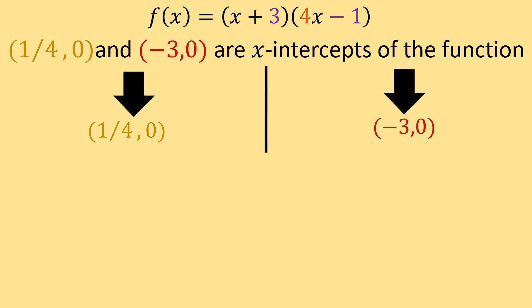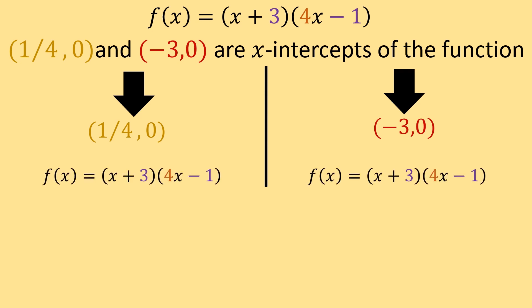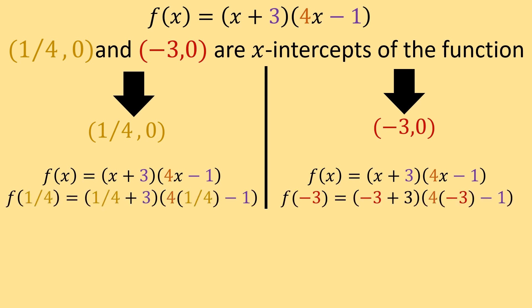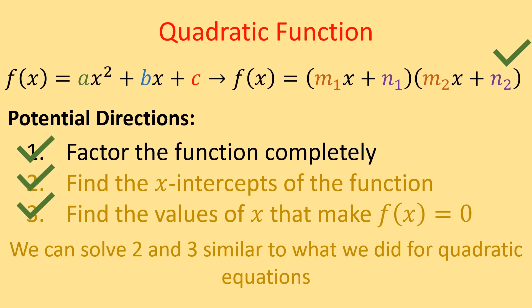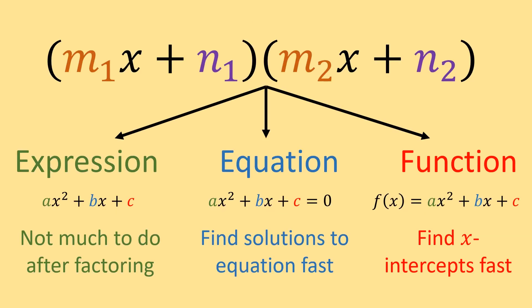To check, we plug 1 fourth and negative 3 into our function. Continuing to simplify, we get f of 1 fourth equals 0 and f of negative 3 equals 0, confirming that (1/4, 0) and (negative 3, 0) are x-intercepts of the function. That covers all the different types of directions you should see whenever you're working with a quadratic expression, equation, or function.